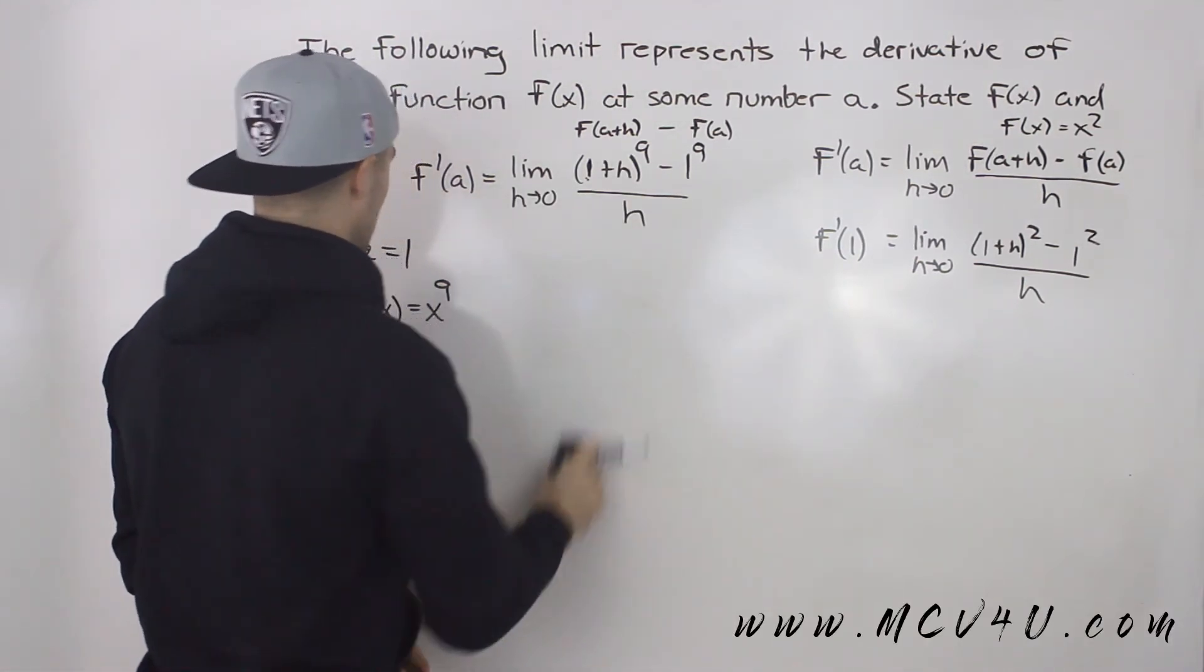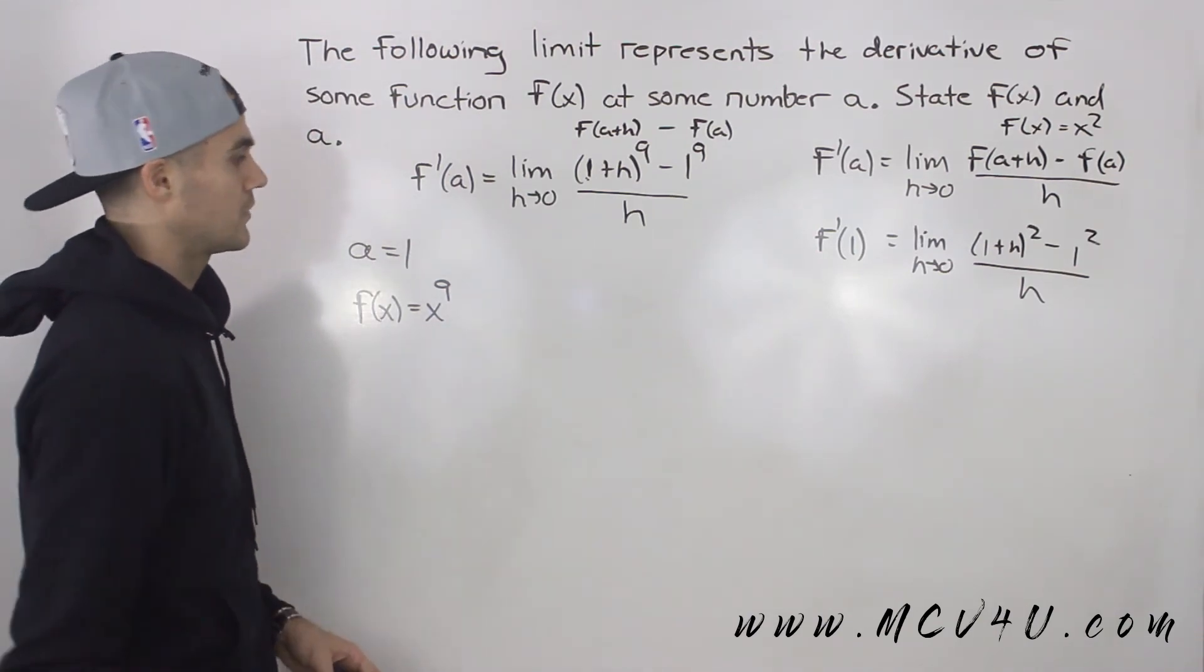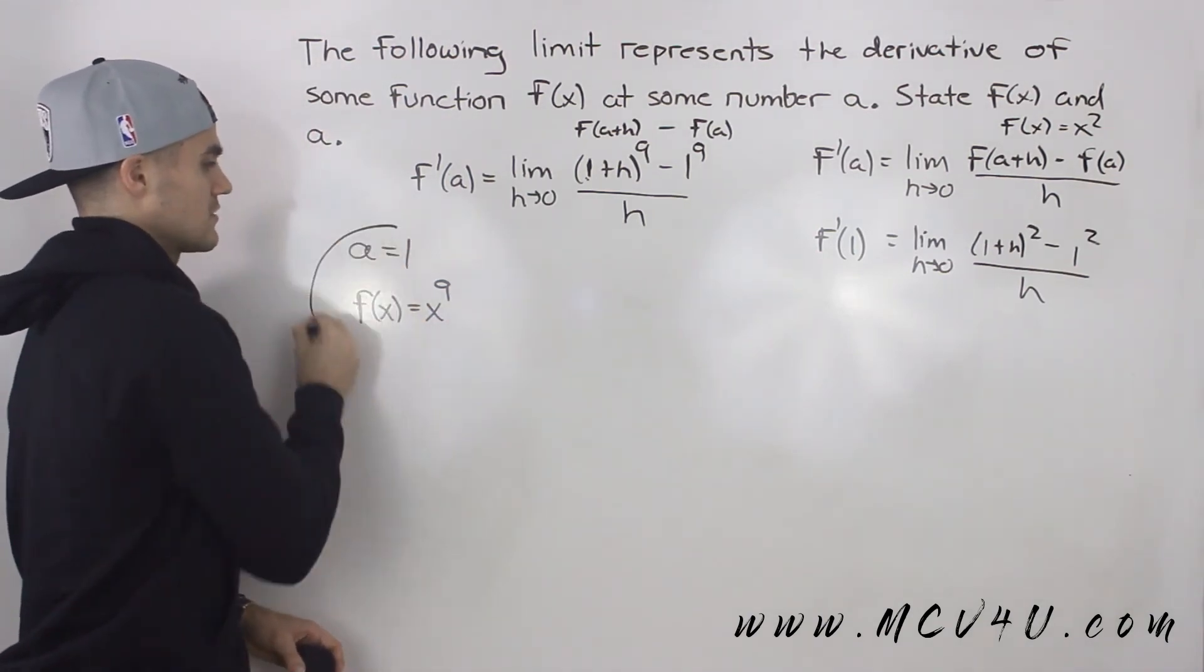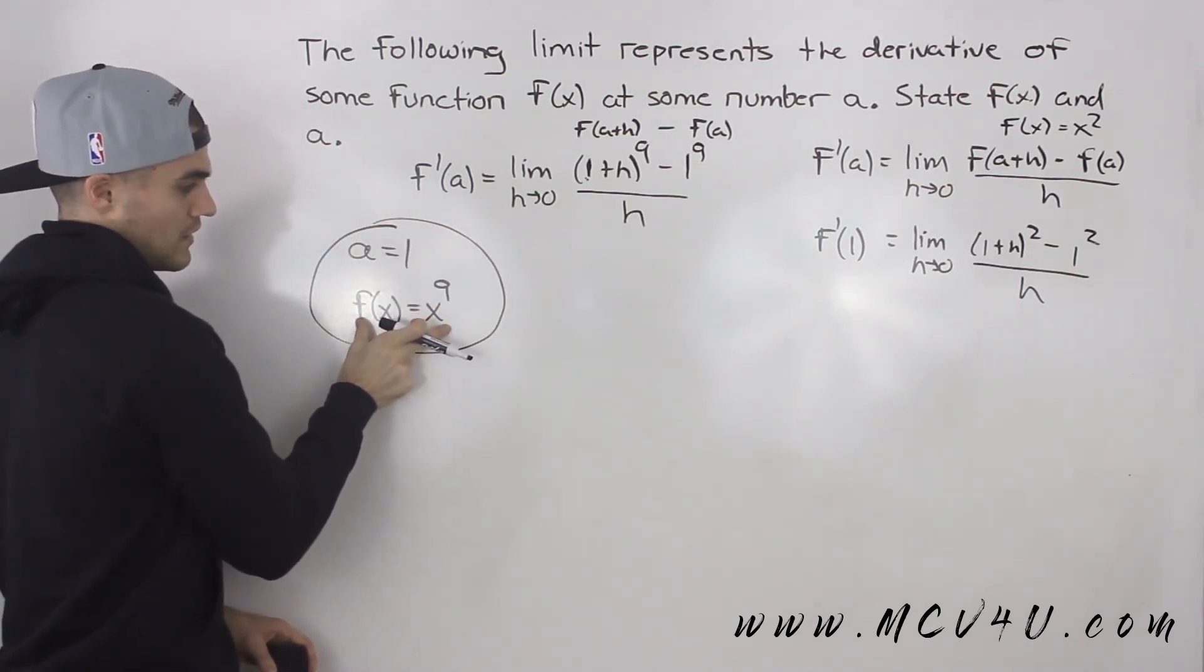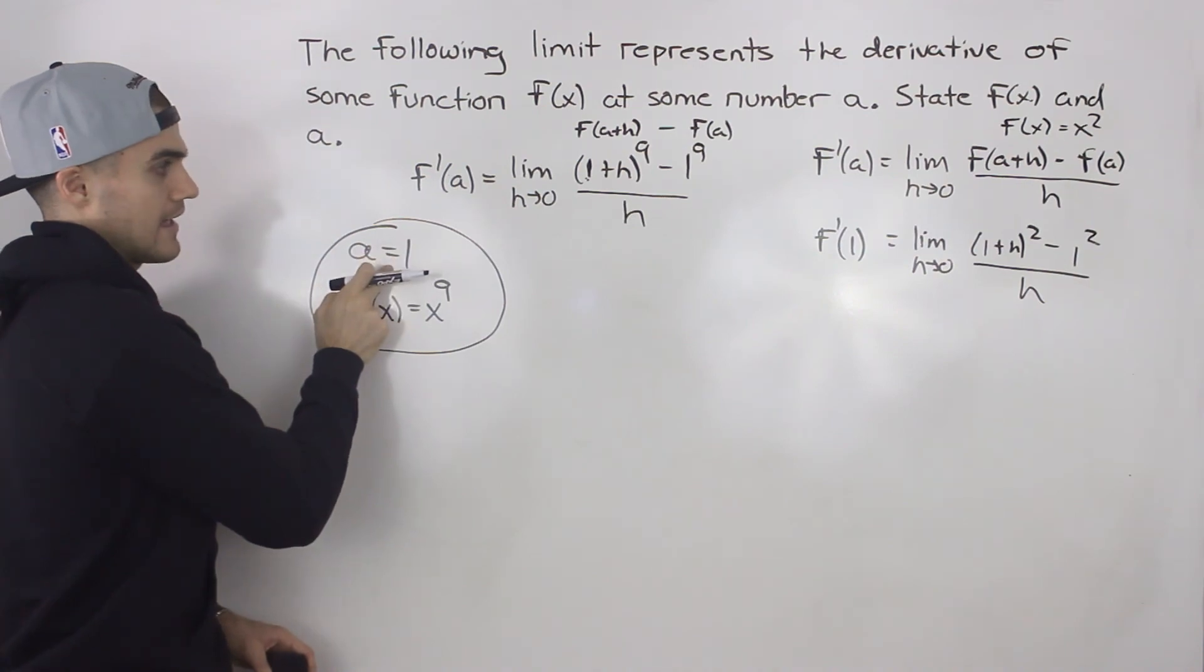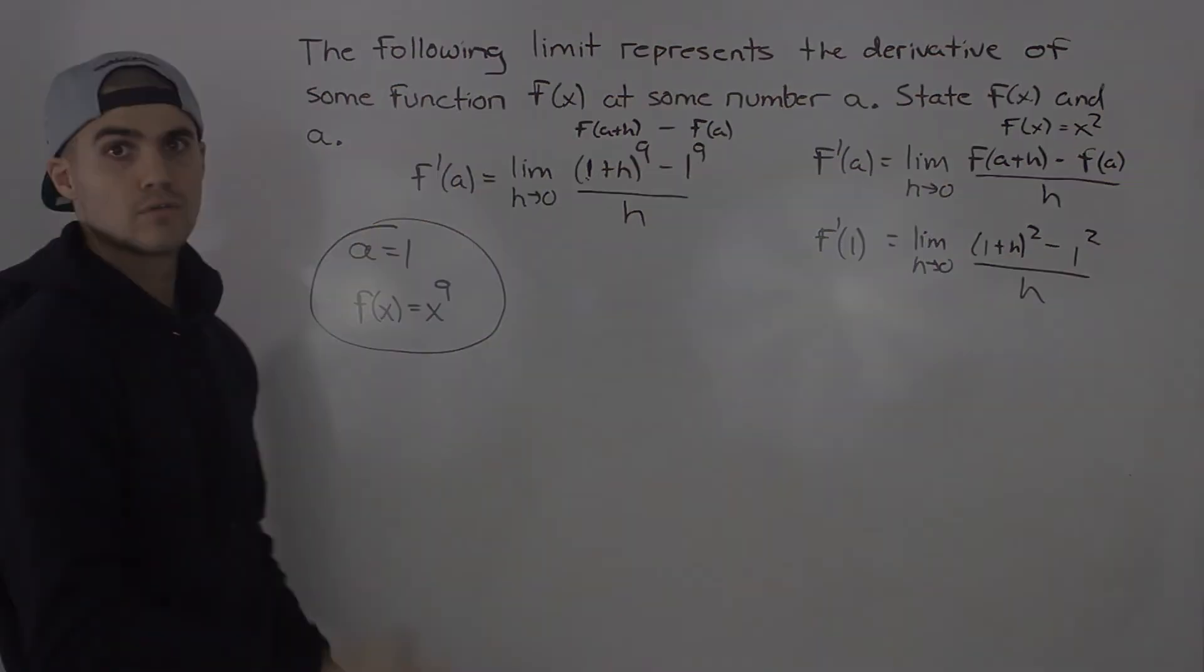So a little bit tricky to see. It's a question that doesn't come up too often, but I saw it come up on a test, so I thought I would include it. But basically, these are the answers here. This here is finding the derivative of this function x^9 at a value of 1.